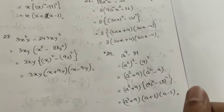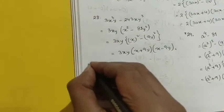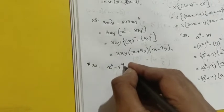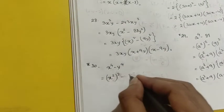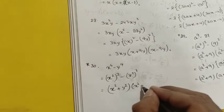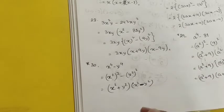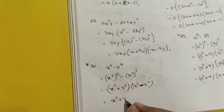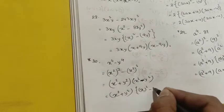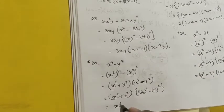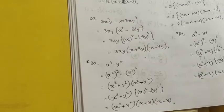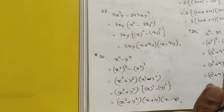Question number 30 is also important. The expression is x⁴ - y⁴. We can write it as (x²)² - (y²)², which gives (x² + y²)(x² - y²). Then (x² - y²) is further factorized as (x + y)(x - y). So the final answer is (x² + y²)(x + y)(x - y).